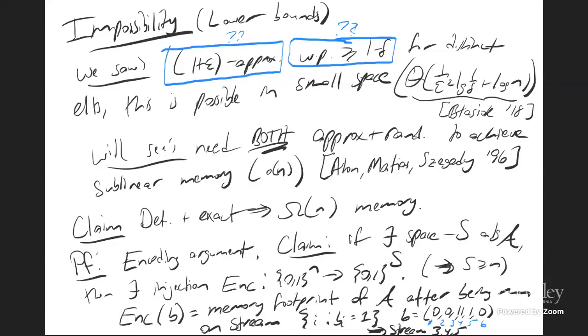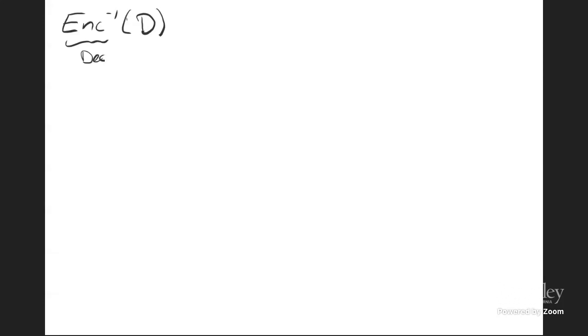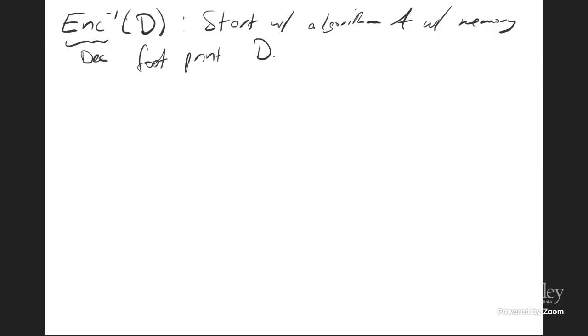After a technical disconnection, continuing the decoding argument: the decoding of some memory footprint D works as follows. Boot up A with memory footprint D. For i equals 1 to N, let T = A.query(), then do A.update(i), then let T' = A.query(). Initially, what A has seen is exactly the support of B. Every time we go through this loop, if i was already in the support of B, feeding it again won't change the number of distinct elements. But if it's something new, it will increment the count by one.